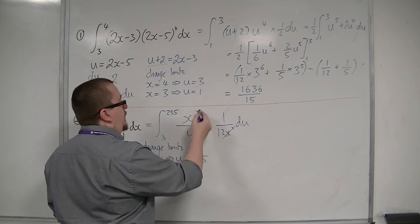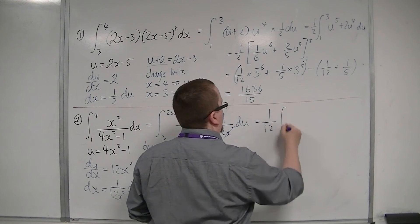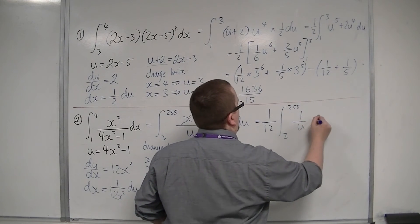Now the x squareds here cancel. The 1 twelfth can come out of the integral. Integrated between 3 and 255 of 1 over u du.